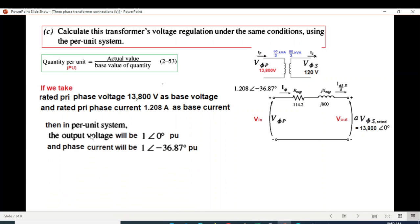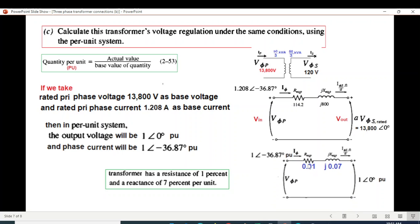So the output voltage in per unit is one angle zero. Same with current: divide by 1.208. So the current will be one angle minus 36.87. This is current in pu. Now resistance: it's given in pu form in the book. Transformer has resistance of 1% and reactance of 7%, so instead of this value, in terms of 0.01 for 1% and 0.07 for 7%. Now it's completely in pu form.